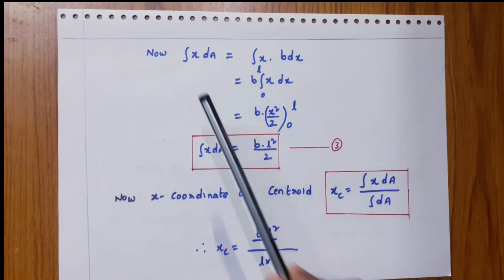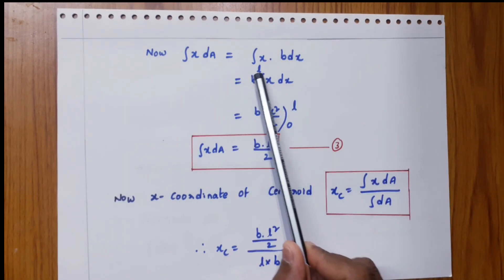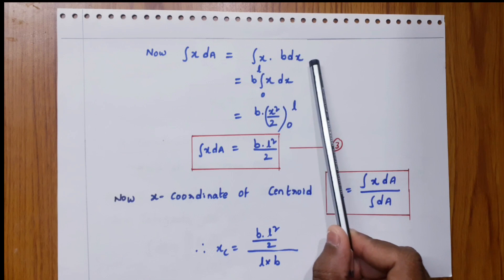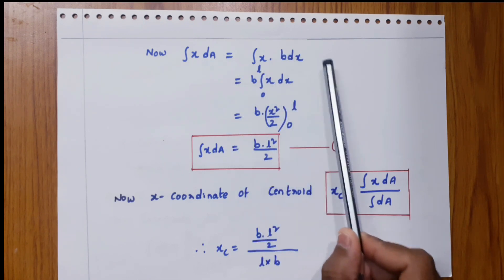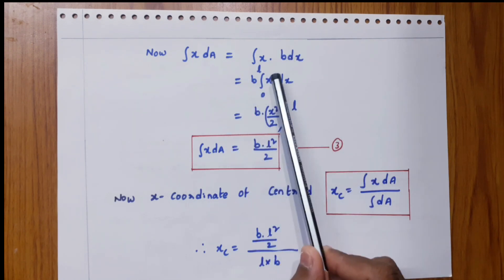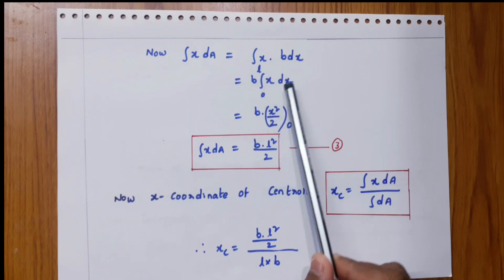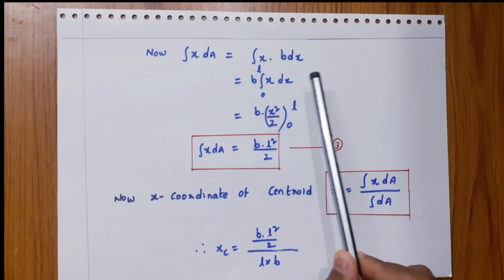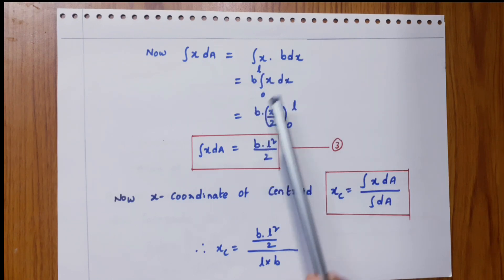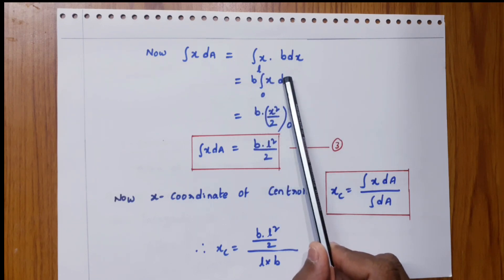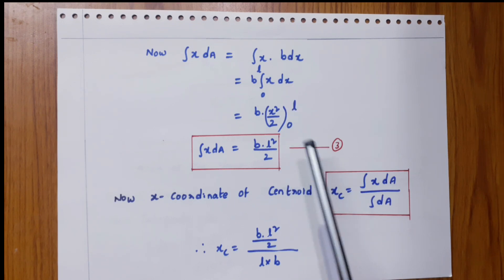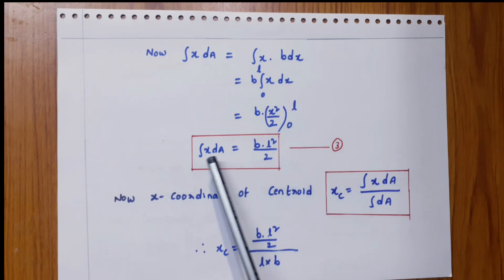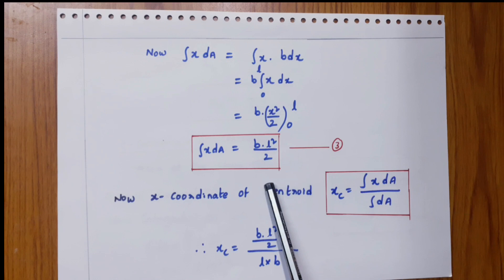Now, integral x dA equals integral x into B dx. Here dA is B into dx, so this becomes B times integral from 0 to L of x dx, which equals B into x squared by 2, with limits 0 to L. So, integral x dA equals B L squared by 2. This is equation number 3.